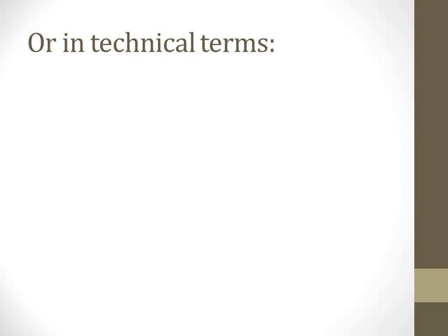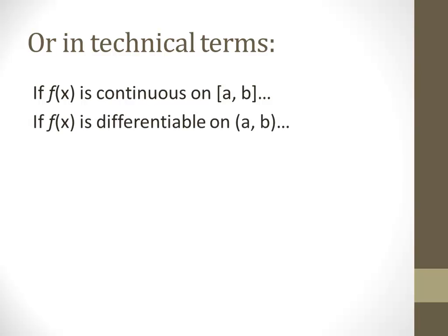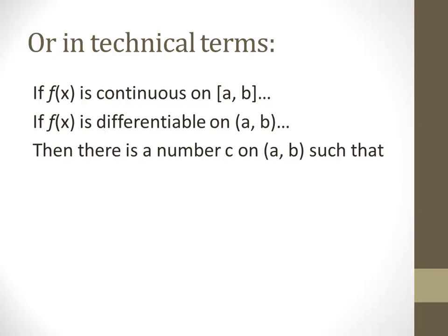Let's talk about the mean value theorem in more technical terms — the math legalese. We assume that f(x) is continuous on the closed interval [A, B], including the endpoints, and differentiable on the open interval (A, B), not necessarily including the endpoints. If that's the case, then the mean value theorem says there is a number c somewhere on that interval A to B such that the derivative of the function at c is equal to the slope of the line going from A to B.